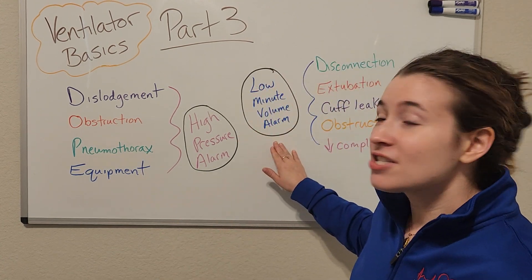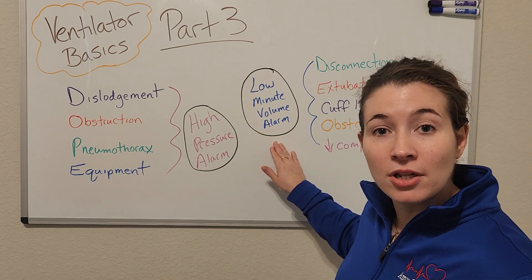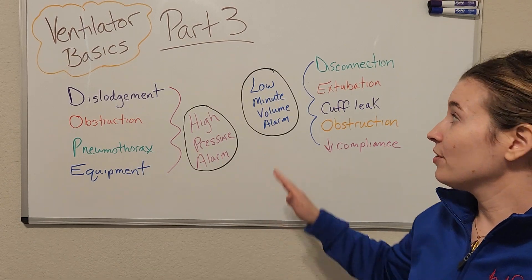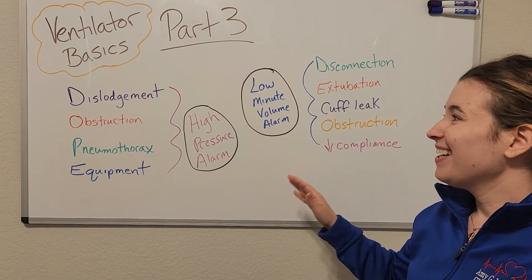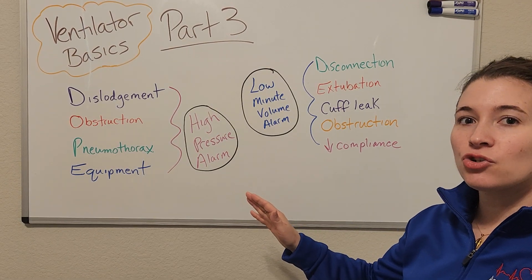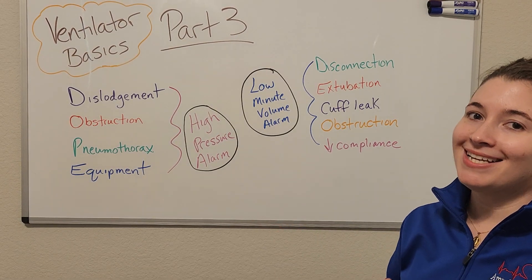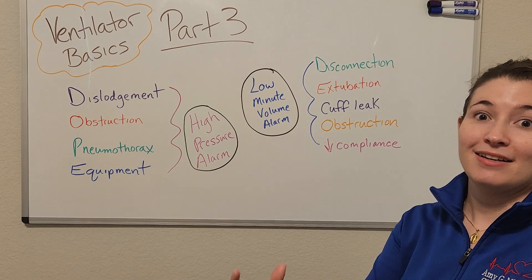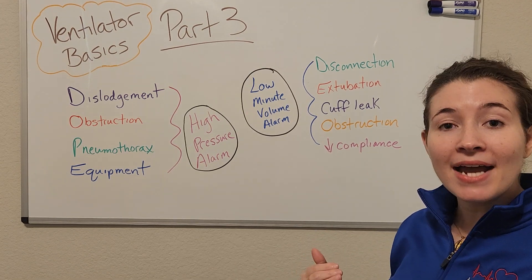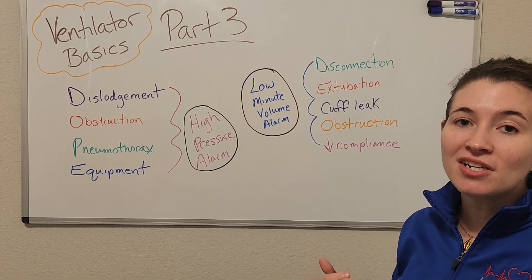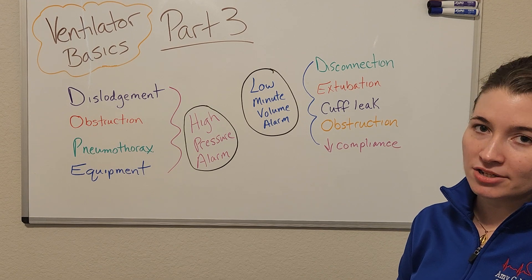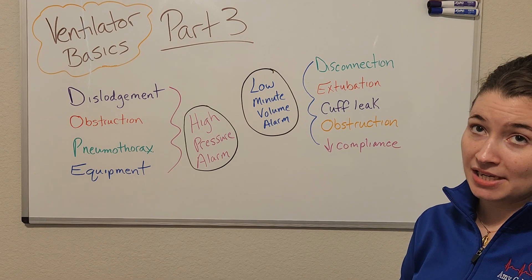Our second most common alarm is a low minute volume alarm. This is similar to the high pressure alarm but it's indicating that the minute volume has decreased dramatically, so the patient is not getting all of the oxygen that they need.